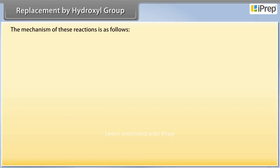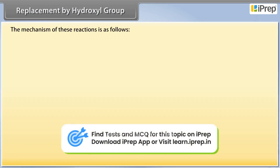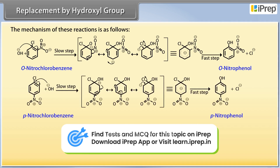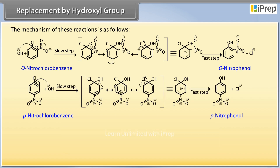The mechanism of these reactions is as follows. Ortho-nitrochlorobenzene reacts with hydroxide ion and forms ortho-nitrophenol. Para-nitrochlorobenzene reacts with hydroxide ion and forms para-nitrophenol.